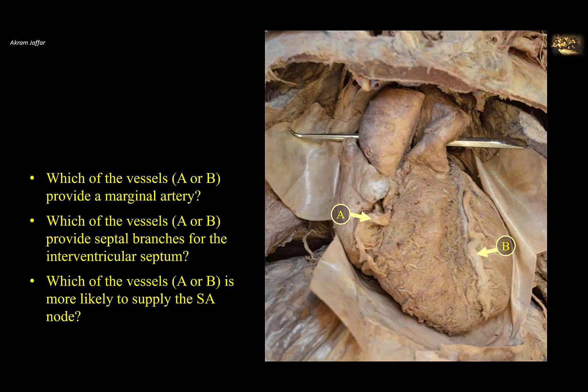Which of the vessels, A or B, provides a marginal artery, and which provides septal branches for the interventricular septum, and which is more likely to supply the SA node? First, let's identify the vessels. A lies in the atrioventricular groove, or coronary sulcus — it is the right coronary artery, with its origin visible from the ascending aorta. Toward the inferior margin of the heart, it gives a right marginal artery, also called the acute marginal artery, referring to the acute margin between the anterior and inferior surfaces of the heart.